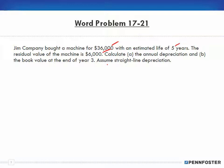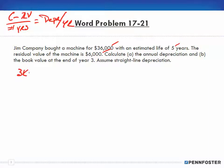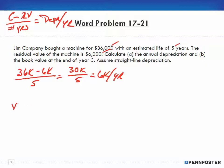The problem confirms we should assume straight-line depreciation. I need to run three years of depreciation, but that's not hard since the amount is the same every year. For straight-line, it's cost less residual value divided by useful life in years: $36,000 minus $6,000 equals $30,000, divided by 5 years, which equals $6,000 per year. So the annual depreciation amount is $6,000.